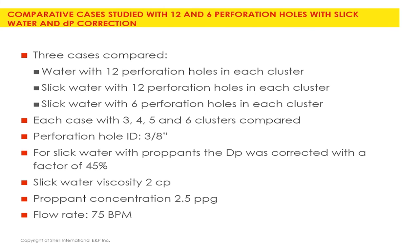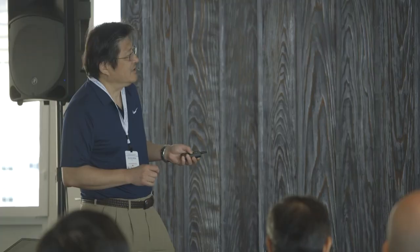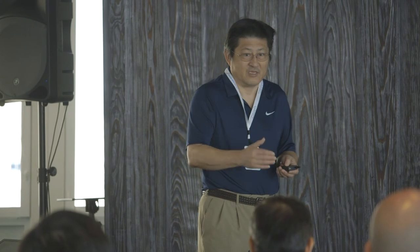We compare three cases: water with 12 perforation holes per cluster, slick water, and slick water with six perforations per cluster - each with three, four, five, and six cluster stages. Each perforation hole is about three-eighths of an inch. For the slick water cases, the differential pressure was corrected with a factor of 45, because we don't really know the exact pressure at each cluster inside the reservoir - those are unknown boundaries that must be corrected before modeling.